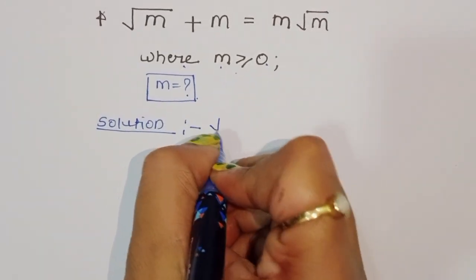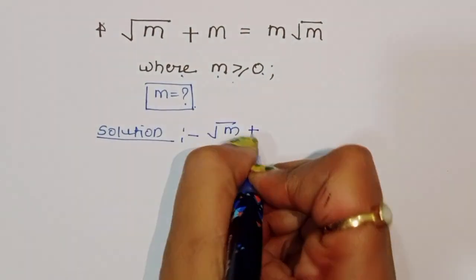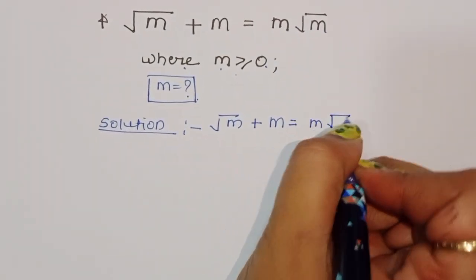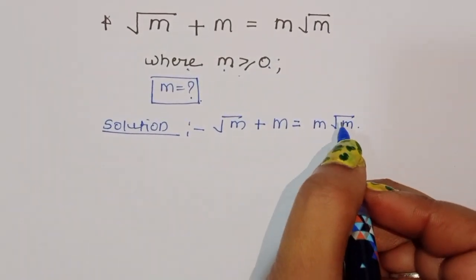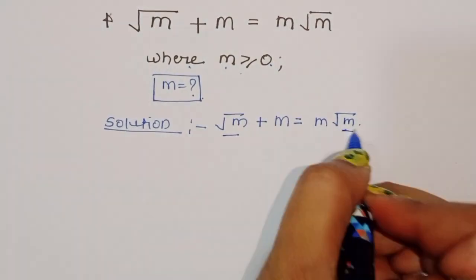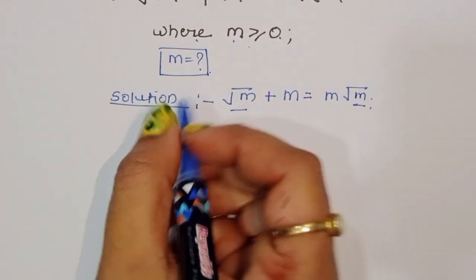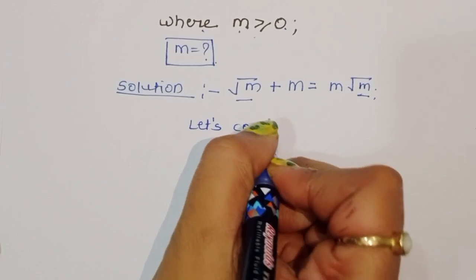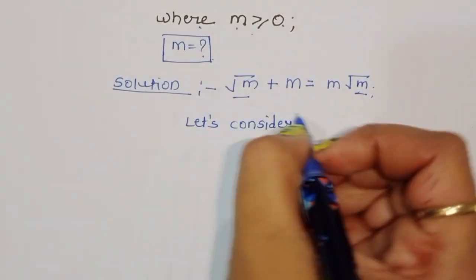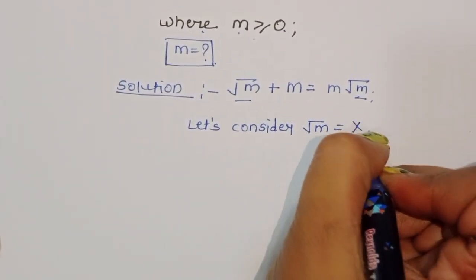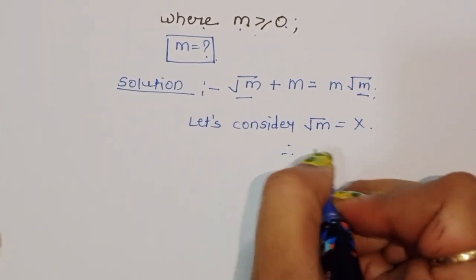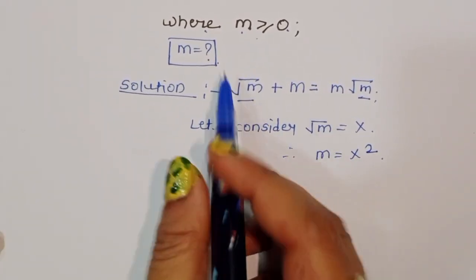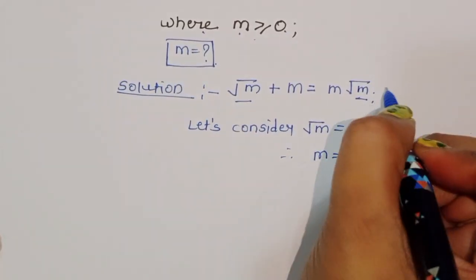We have the equation: square root of m plus m is equal to m times square root of m. We can see square root of m appears in multiple places, so let's consider square root of m is equal to x. Therefore, m is equal to x squared. This is equation 1.